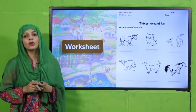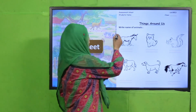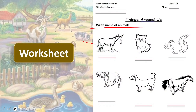My dear students, write down your name and your class. Then under 'Things Around Us,' write the name of each animal. This is a donkey. This is a cat. Then a squirrel. Then a buffalo. Then comes a dog. And then a horse. This is how you will complete this worksheet.